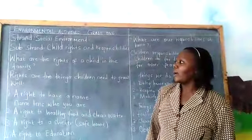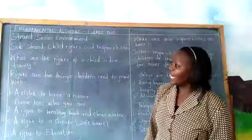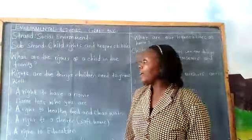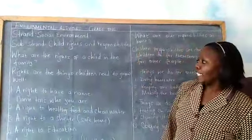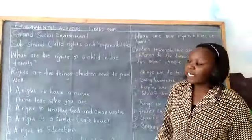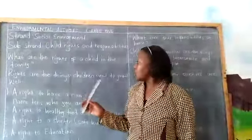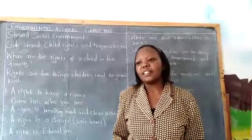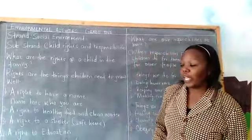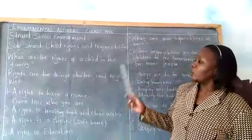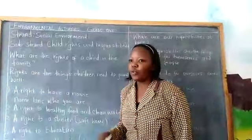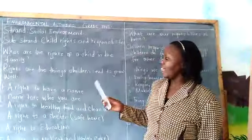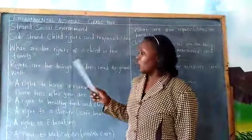We are to start by looking about the rights of a child — the rights of children, and what are the rights of a child in the family? Rights are the things children need to grow well. If you happen to get a question asking you what are children's rights, you have to say that they are the things children need to grow well.